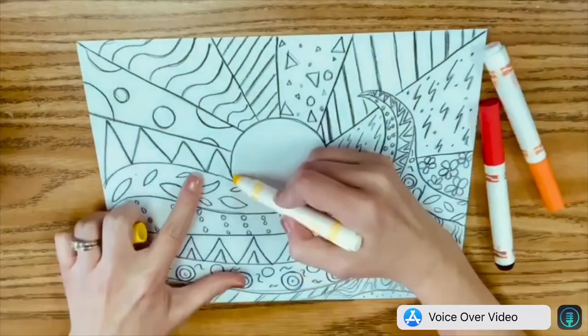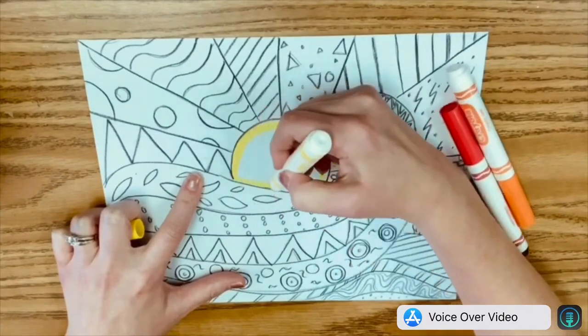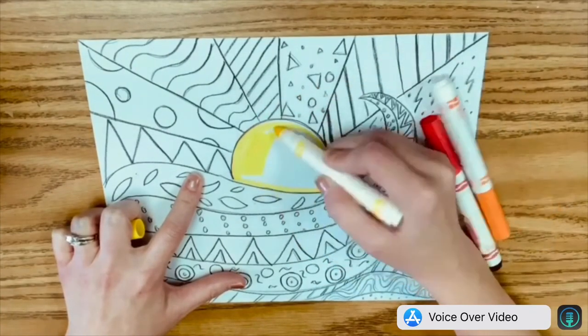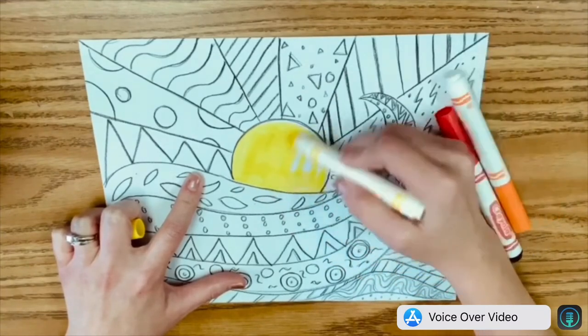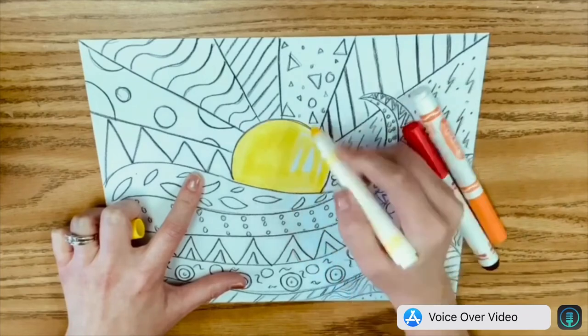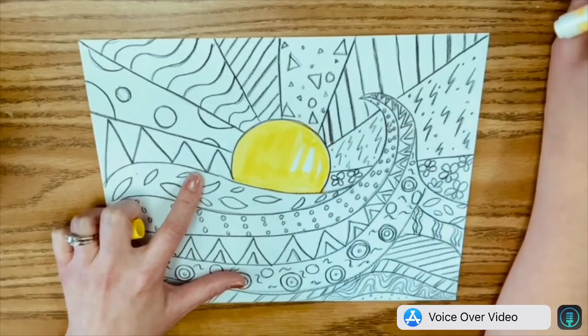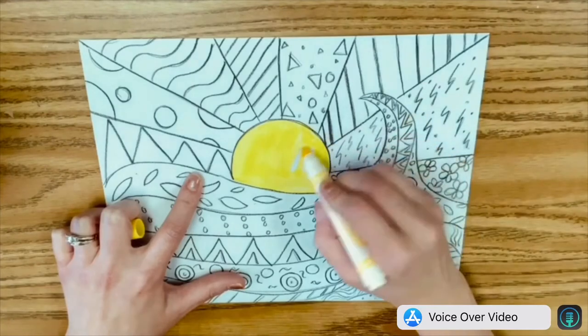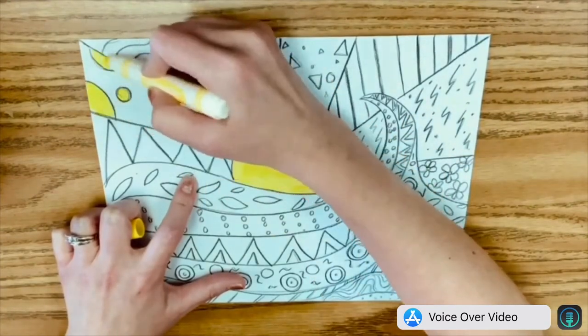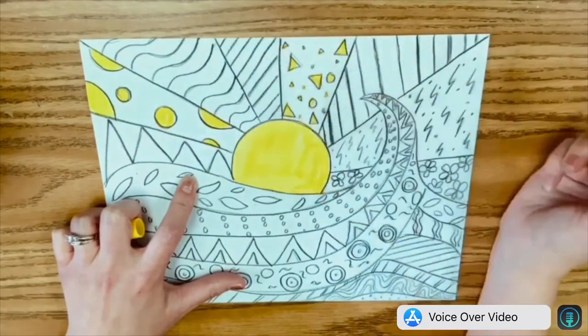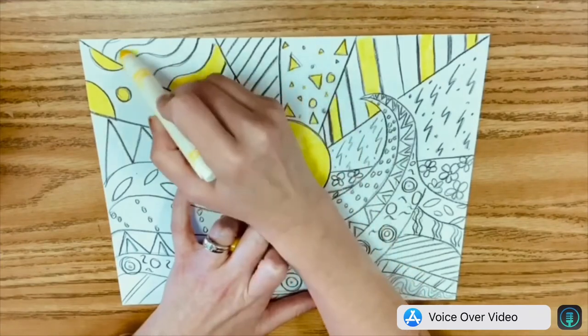Now there's no rhyme or reason. It's however you want to color it. This is your design. You're the artist. You do what works for you. So I'm going to start with the yellow here. I'm going to speed up the video because you get the idea. Just finding places that I want to put the yellow.